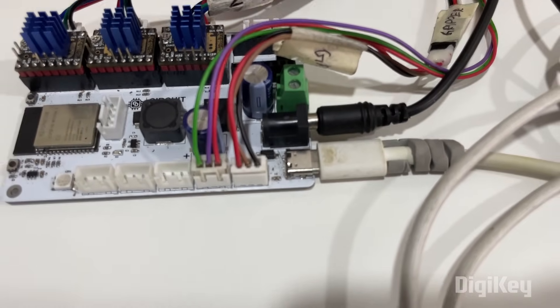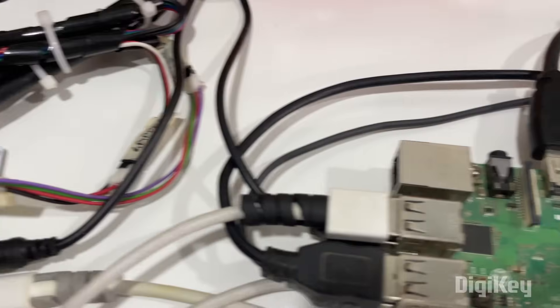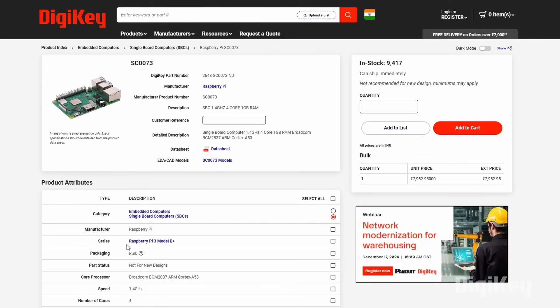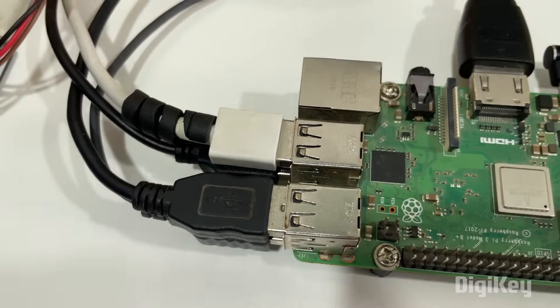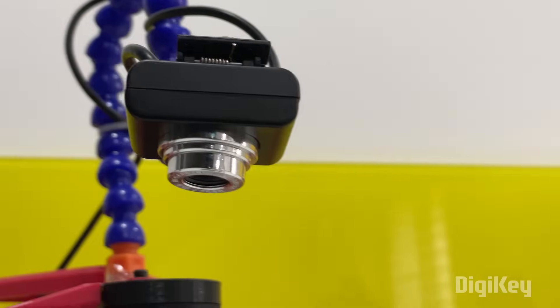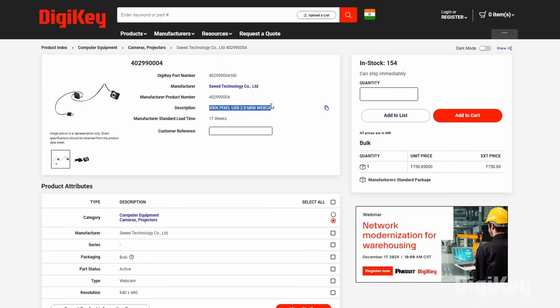This controller board has a type-C USB port that can connect to a Raspberry Pi here. This is a Raspberry Pi 3 model B V1 board with 4GB of RAM. And connected to this Pi is a camera placed on our robotic arm here. It's a USB 2.0 mini webcam from C Technology.